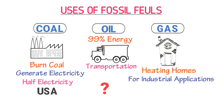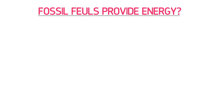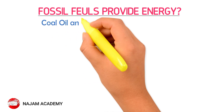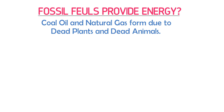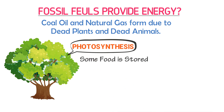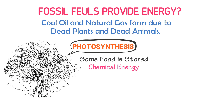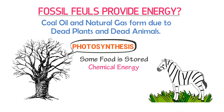You may wonder where fossil fuels get their energy. As we learned, fossil fuels like coal, oil, and natural gas are formed from dead plants and animals. Living plants make their own food by photosynthesis, and some food is stored in the form of chemical energy. Even when plants die, they still have that stored chemical energy. Animals eat plants and get energy from them, storing energy in their bodies in muscles. Even when animals die, they still have stored chemical energy.